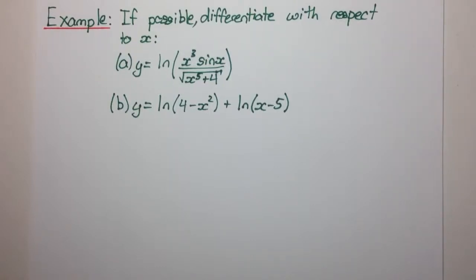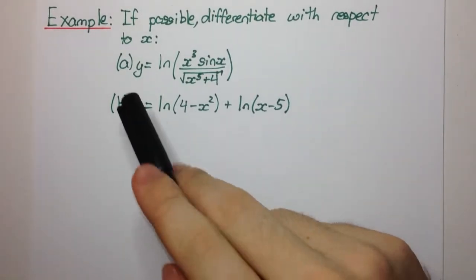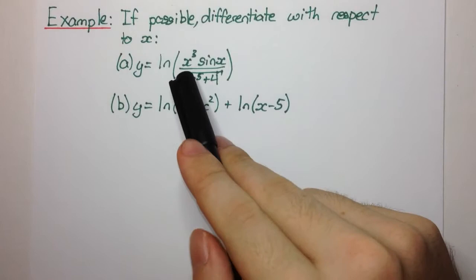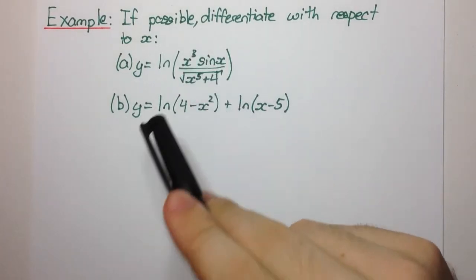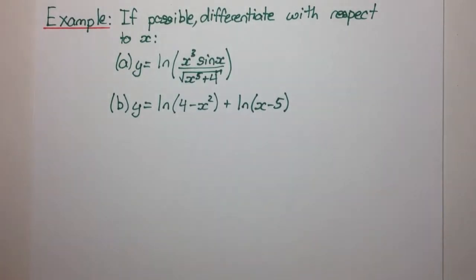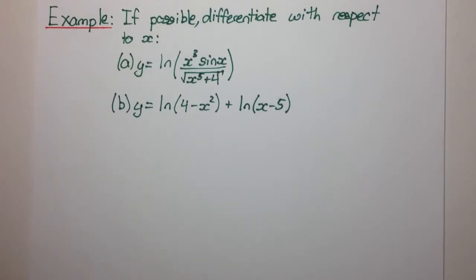Okay, welcome to today's video everyone. If possible, differentiate with respect to x. Part a, y equals ln of x cubed times sine x over the square root of x to the 5 plus 4.